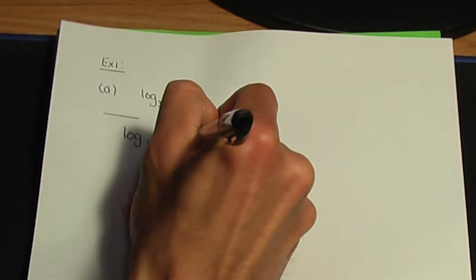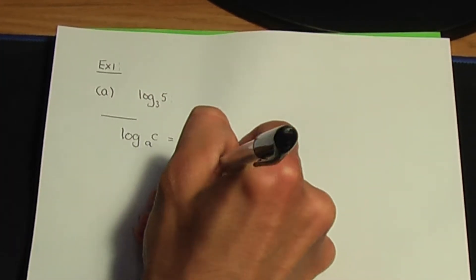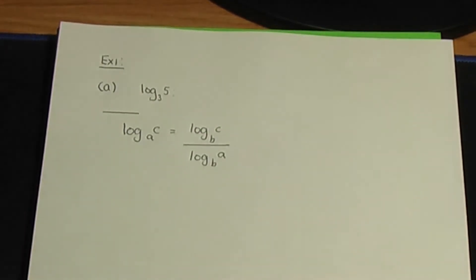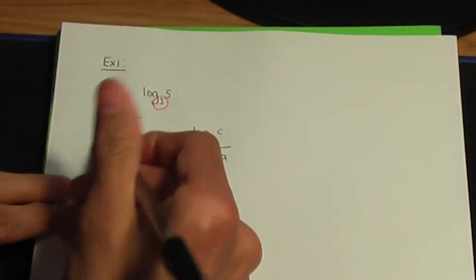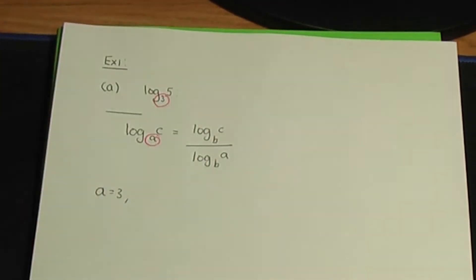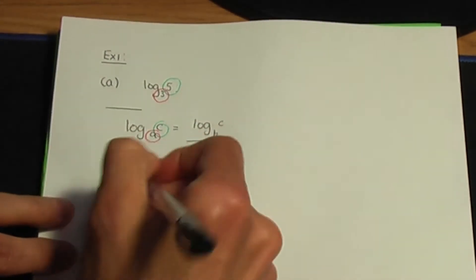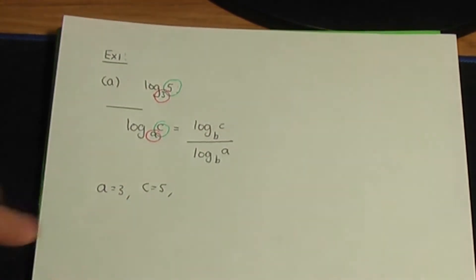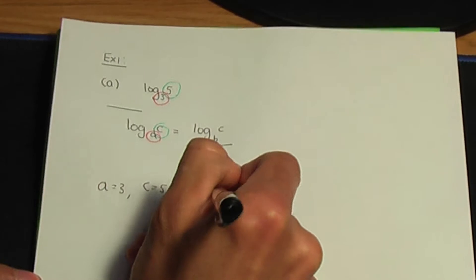Remember the rule: log of c to the base of a is the same as log of c to the base of b divided by log of a to the base of b. In this case, making a quick comparison — my a term is 3, so a is equal to 3. The c term is 5, so c is equal to 5. According to the question, we need to change the base to 10, so b is 10.